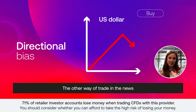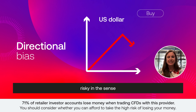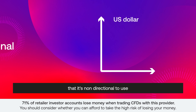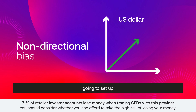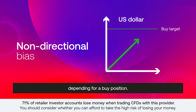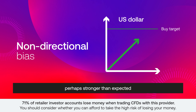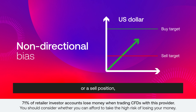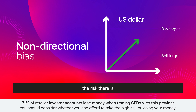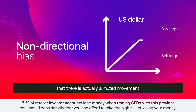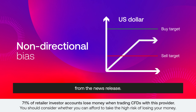The other way of trading the news is perhaps less risky in the sense that it's non-directional. You're just going to set up your trade on both sides — a buy position if the news comes in stronger than expected, or a sell position if the news comes in weaker than expected. The risk there is that there is a muted movement and a muted response from the market to the news release and you don't get a trade at all.